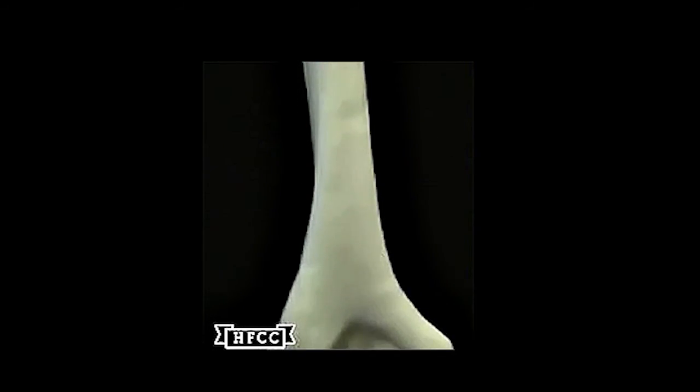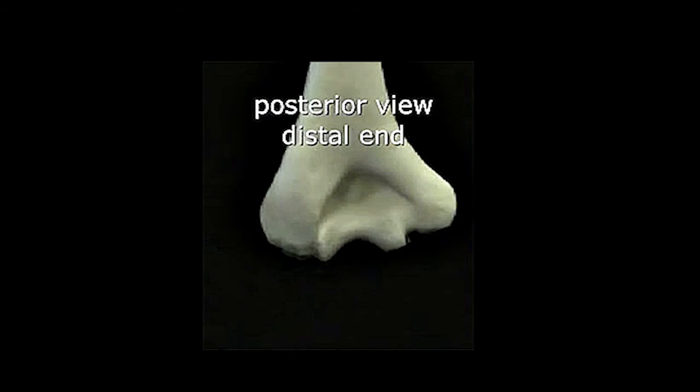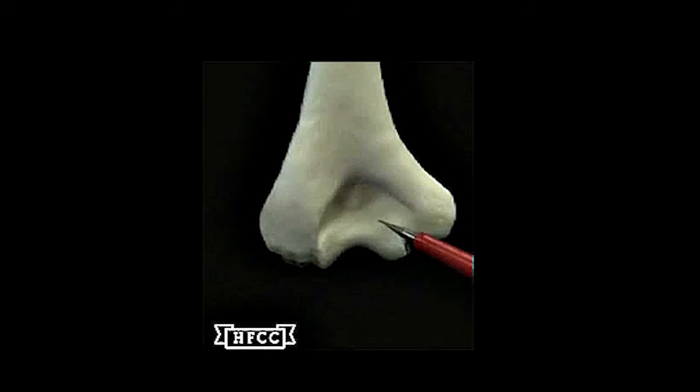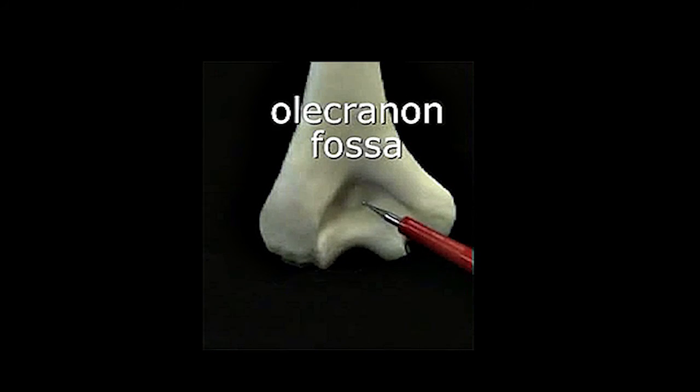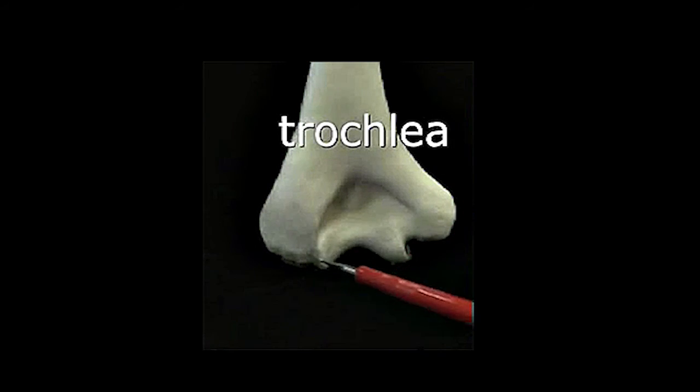And then going down the diaphysis here to the distal portion of the posterior of the humerus to look at the relevant anatomy. First and most prevalent is this fossa here that I'm encircling, very single indentation. That tells you it's a posterior part. There's only one there.